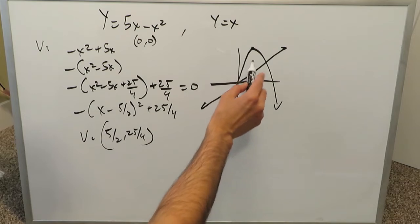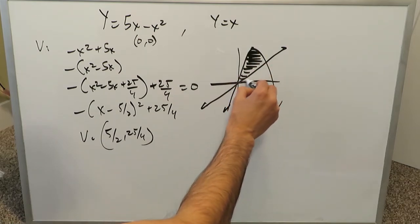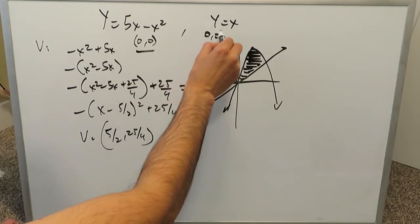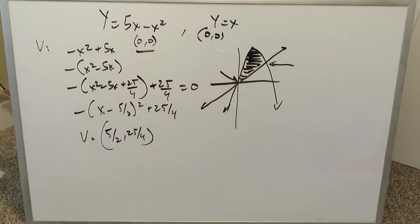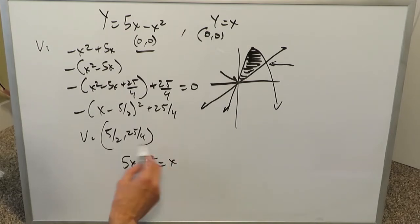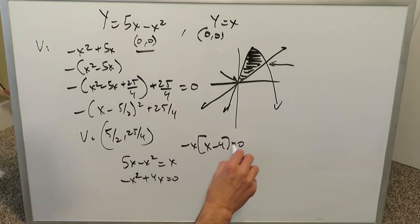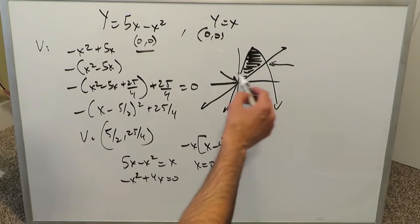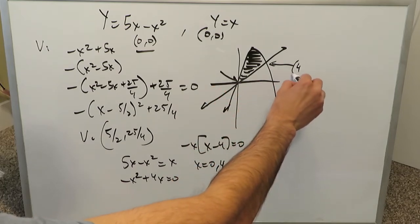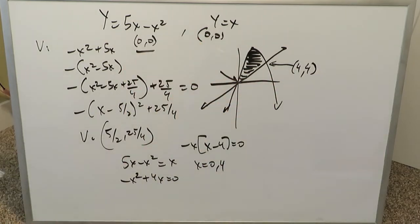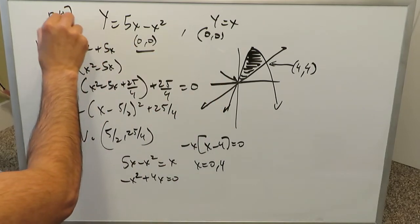The area between the curves is bounded by these two functions. One intersection point is the origin. To find the other, we set 5x − x² = x, giving −x² + 4x = 0, so −x(x − 4) = 0, meaning x = 0 or x = 4. Plugging x = 4 gives y = 4, so the second intersection point is (4, 4). Our interval is therefore [0, 4].